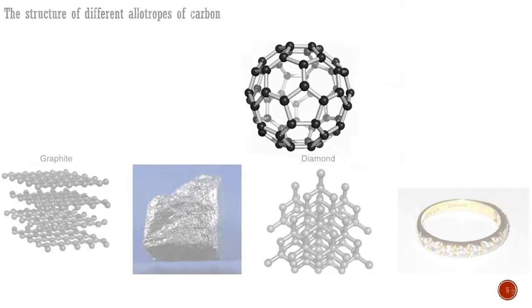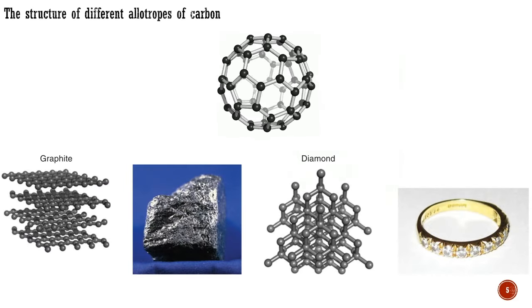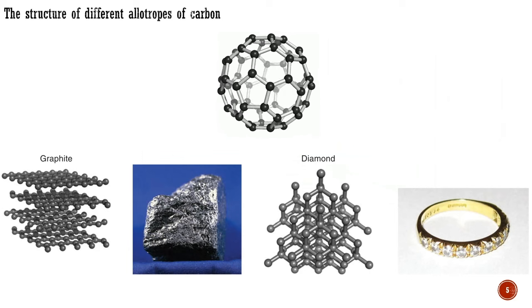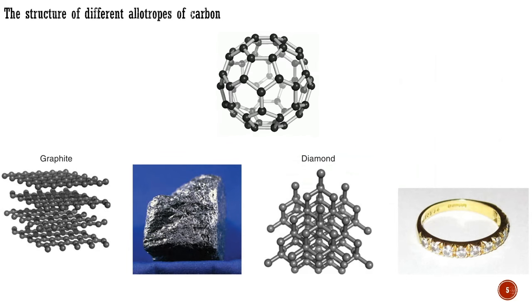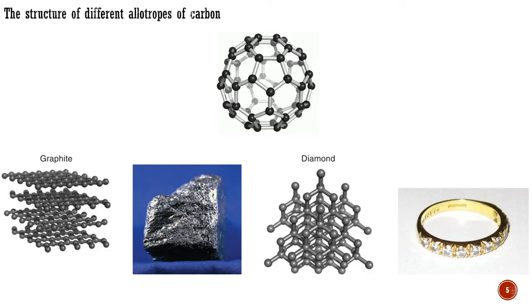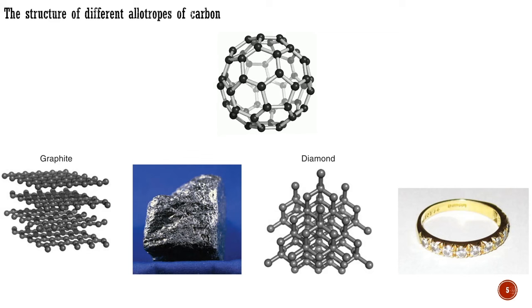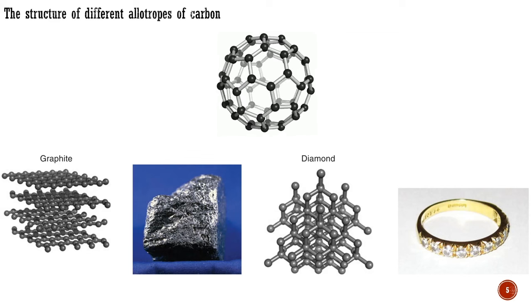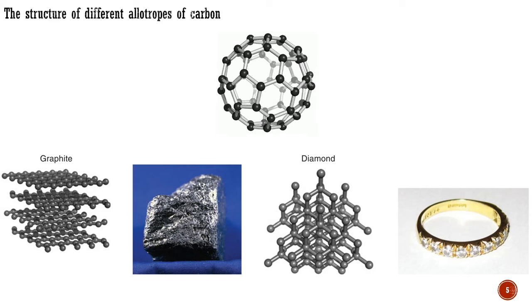A compound's properties are determined not only by the atoms it contains, but also by the spatial arrangement of these atoms. Graphite and diamond, two other allotropes of carbon, are both composed only of carbon atoms, yet their properties, both chemical and physical, are completely different because the carbon atoms are arranged very differently.